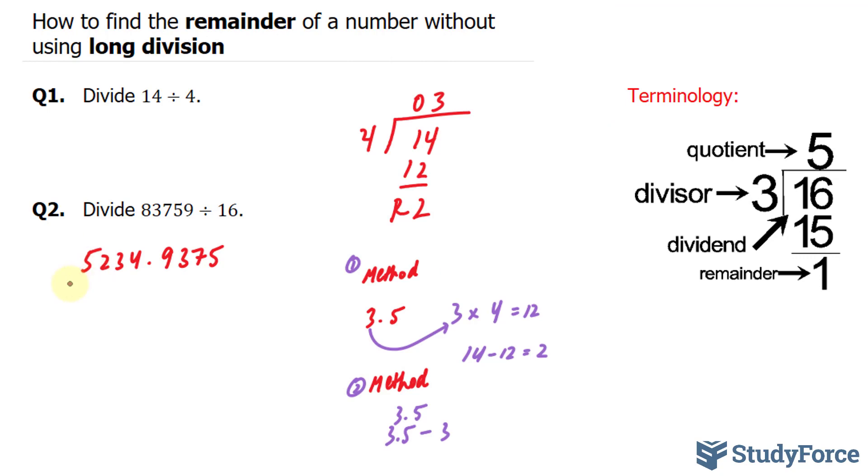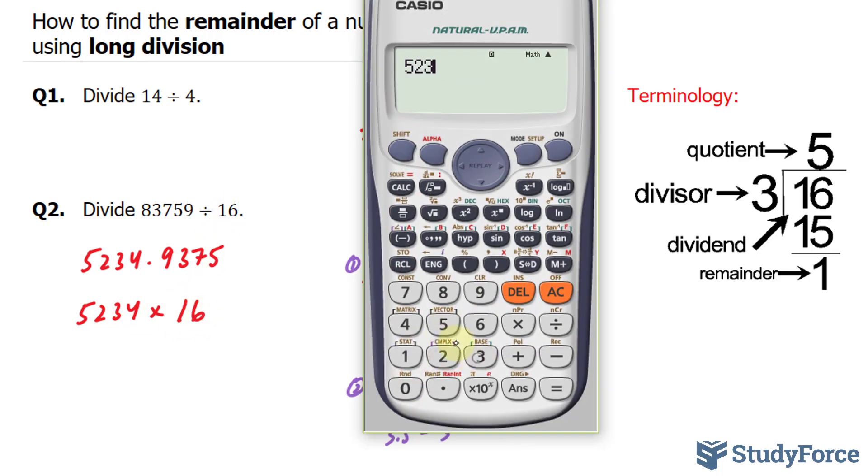Just like before, I'll take this part of the number, the integer, 5,234, and multiply it by the divisor, which is 16. 5,234 times 16. This gives me 83,744.